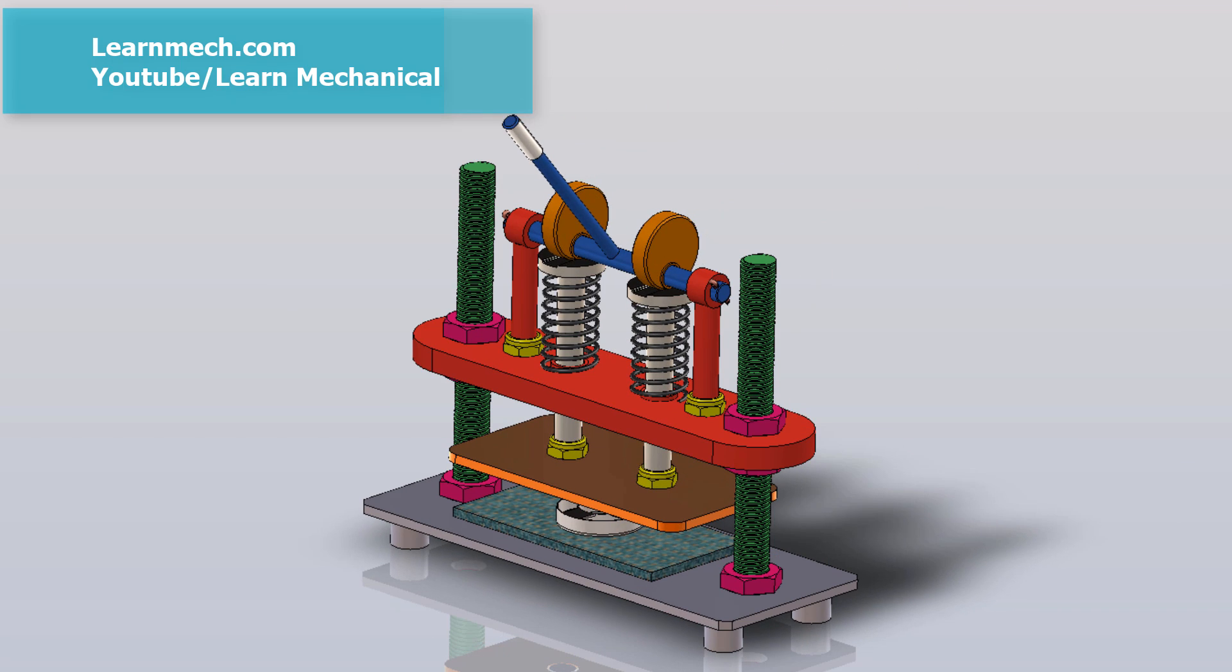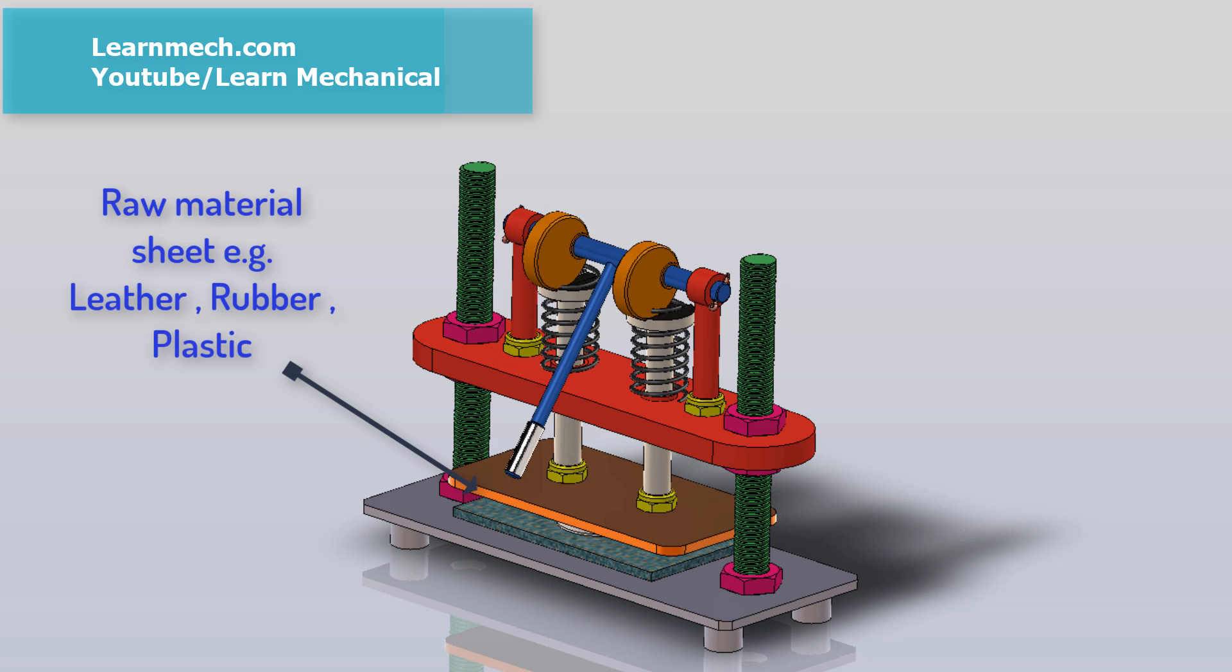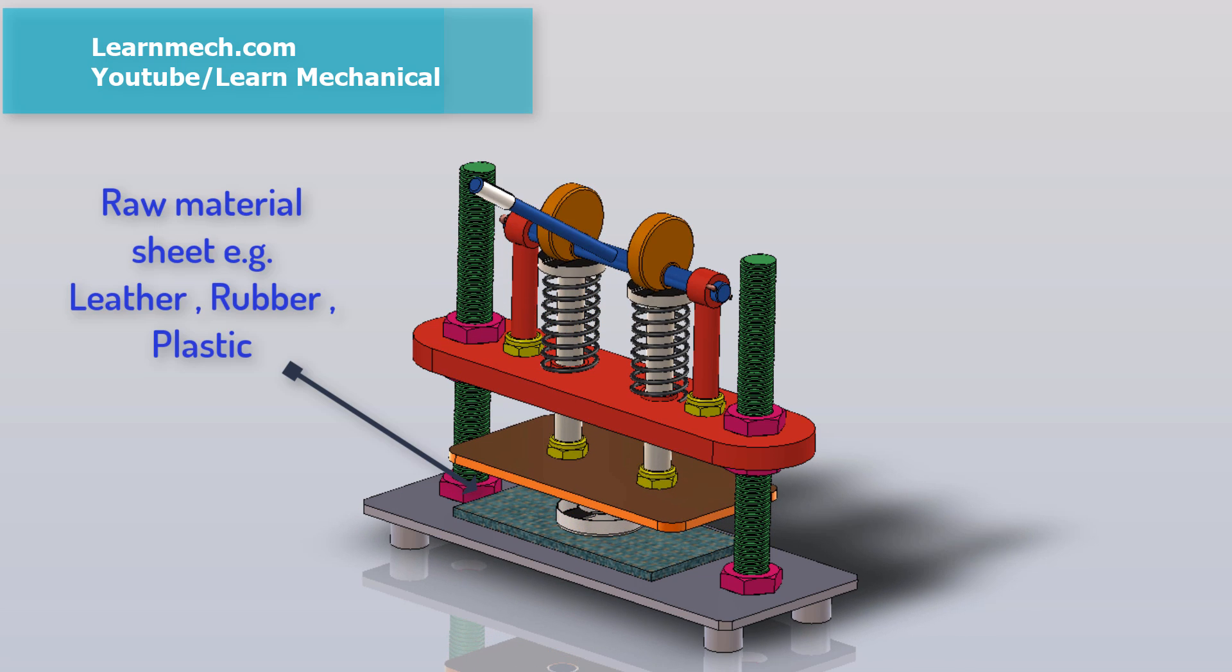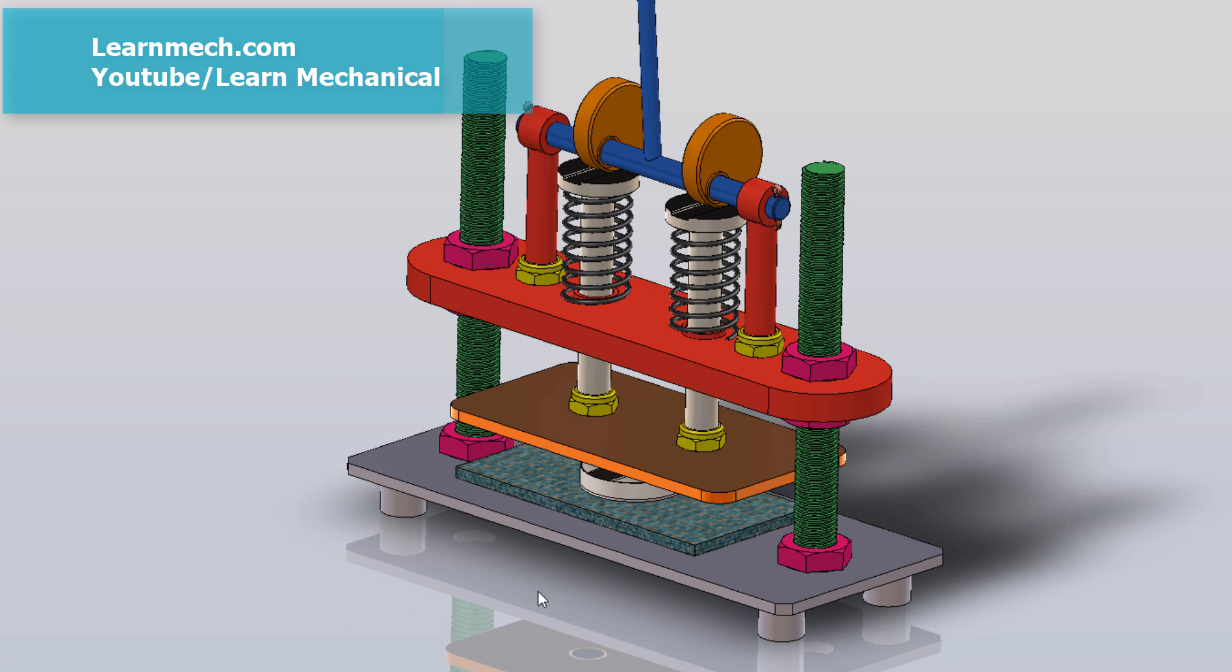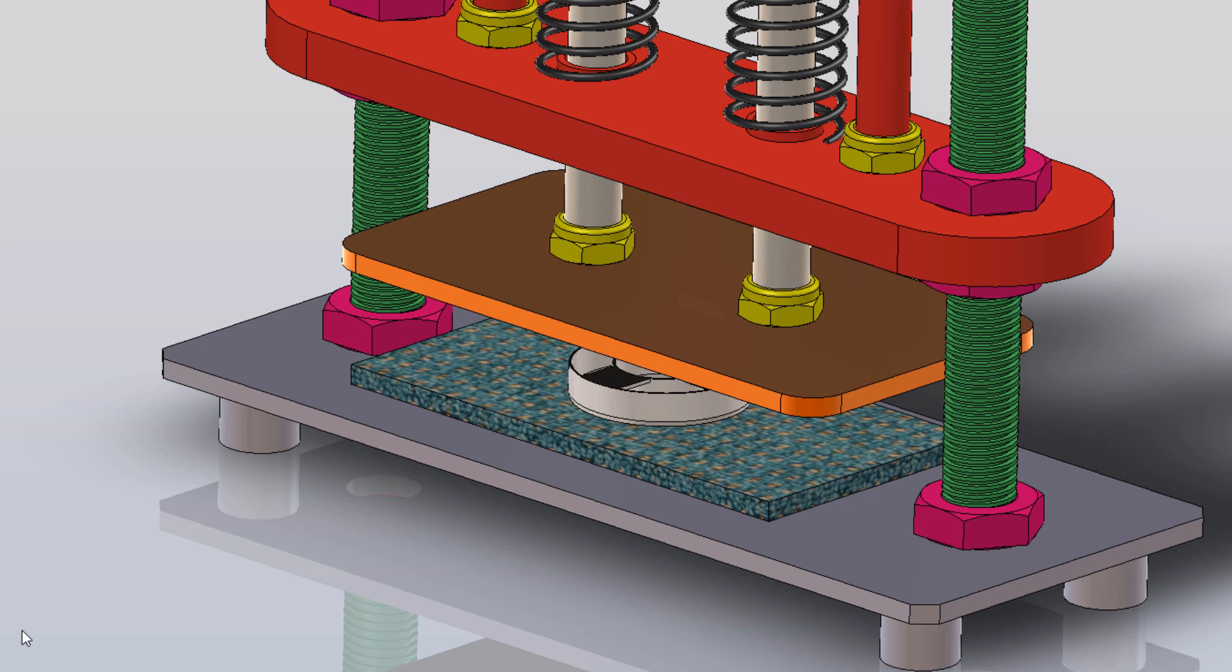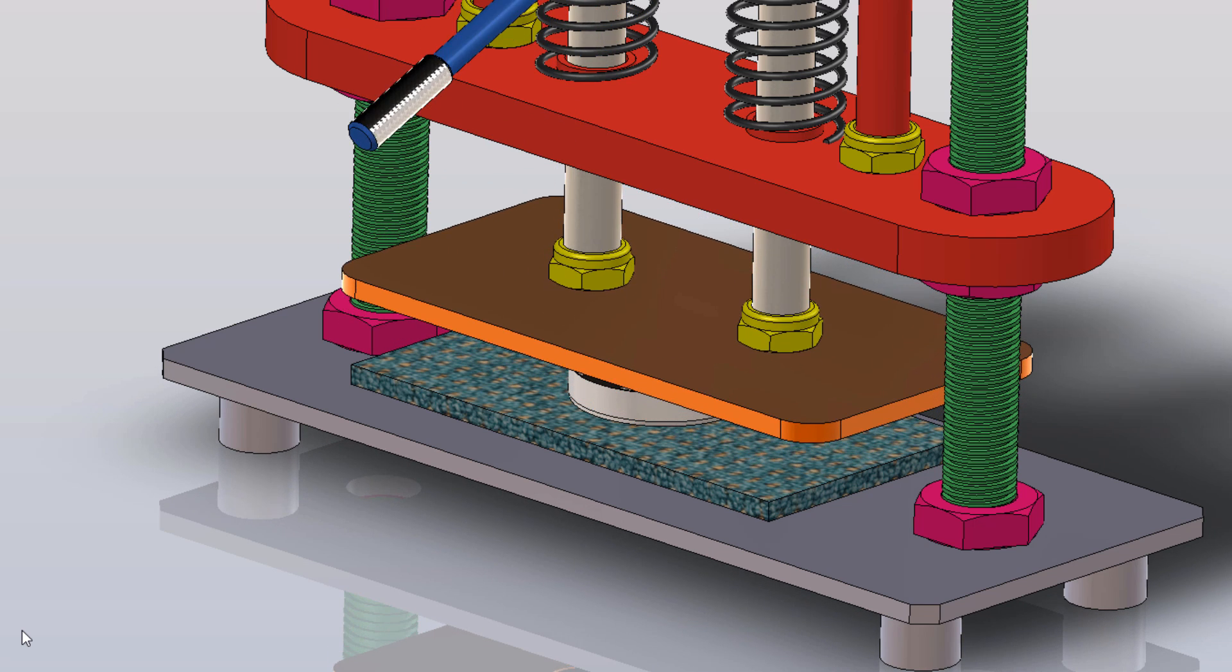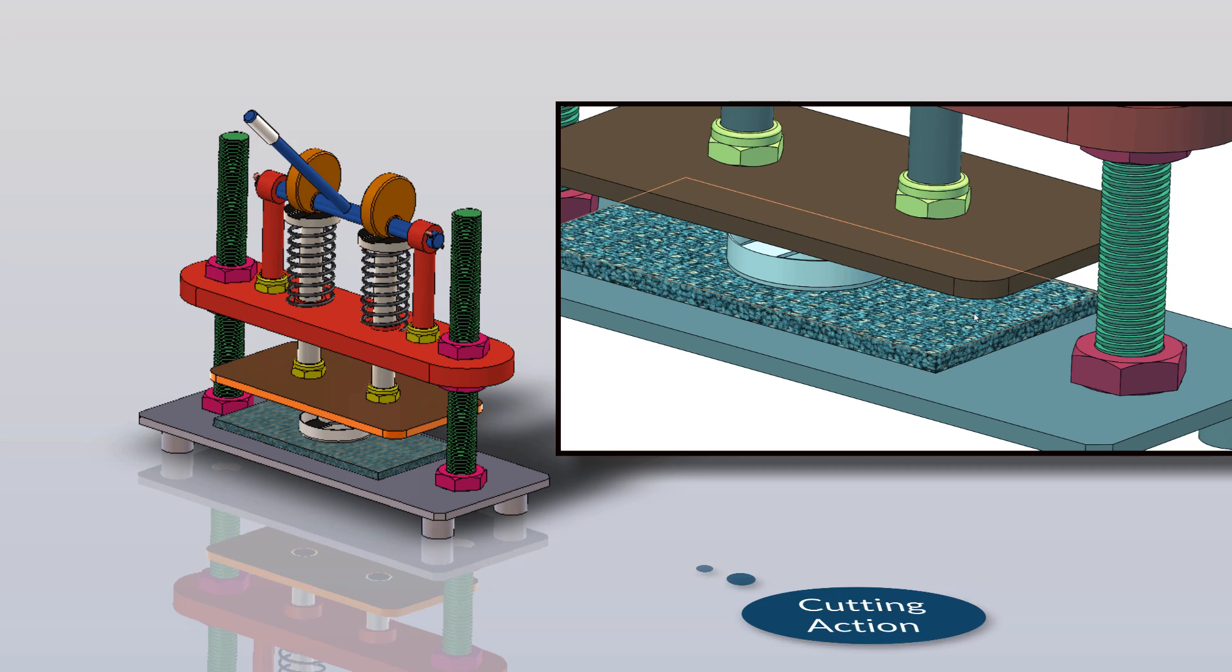In manual die cutting machines, a piece of paper or leather is placed on the platform of the machine. Then, a die in the desired shape is laid on top of the paper. Once everything is in place, the lever is cranked by hand, which feeds the platform through the machine.